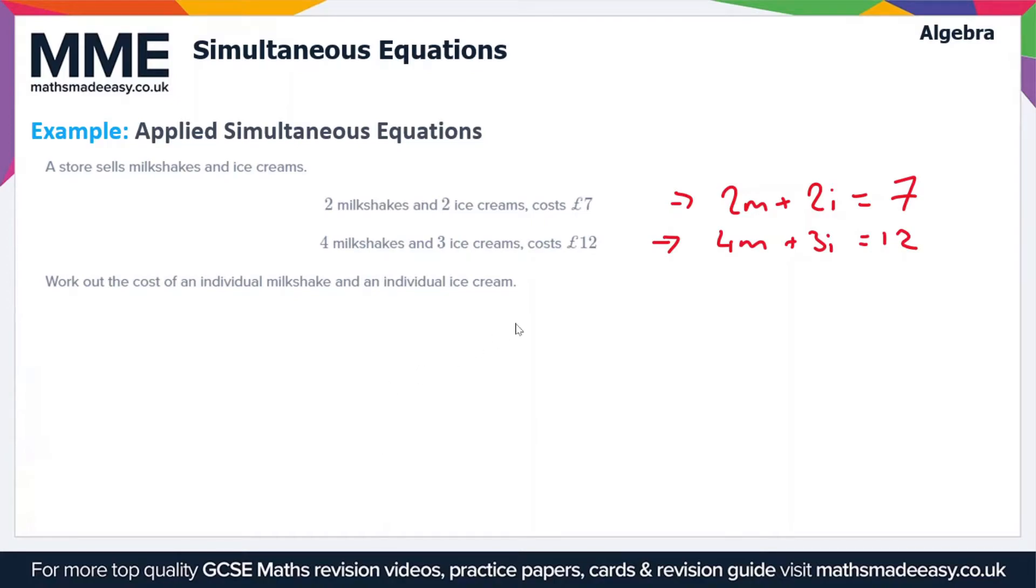What I'm going to do is times the first equation, let's call this equation 1 and this equation 2. I'm going to times equation 1 by 2 throughout and then we'll subtract equation 2 from that.